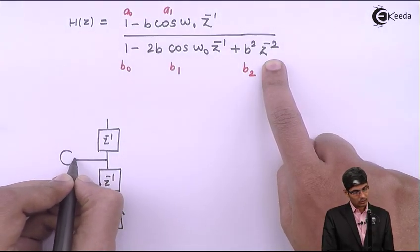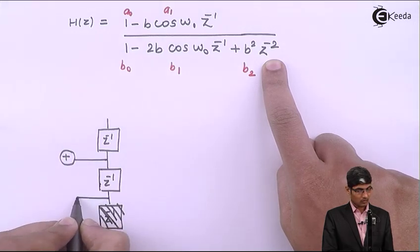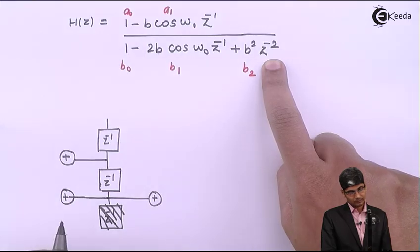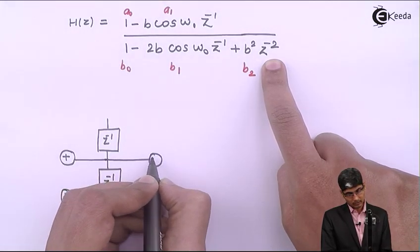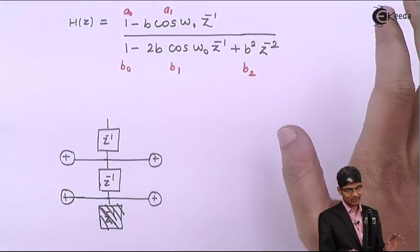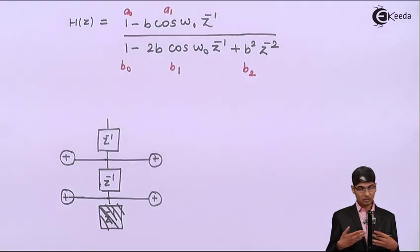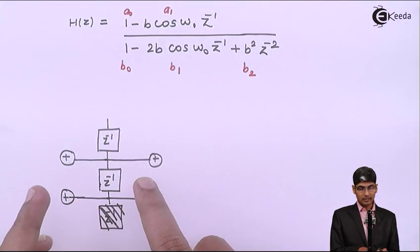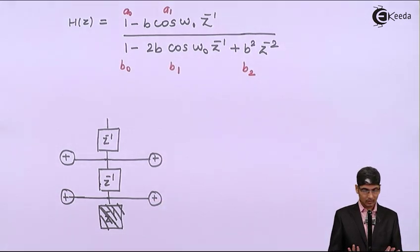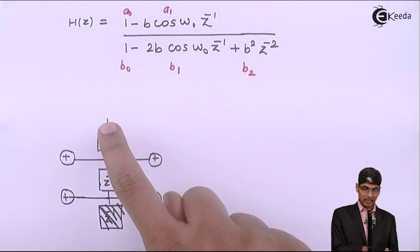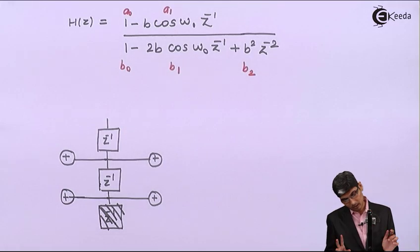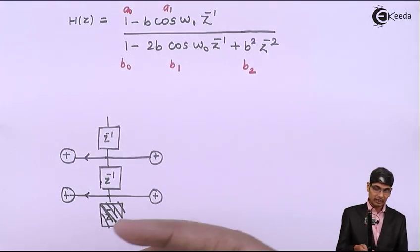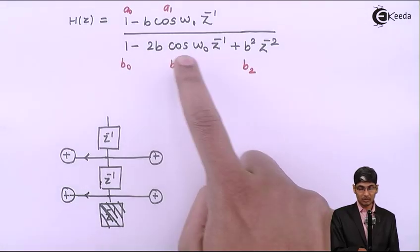Now I will pull out adders on both sides of the structure — one on the left side and one on the right side. Because the maximum degree is z⁻², I need 2 delay blocks. The B components go toward the feedback (backward) side. B₁ and B₂ are on this side.